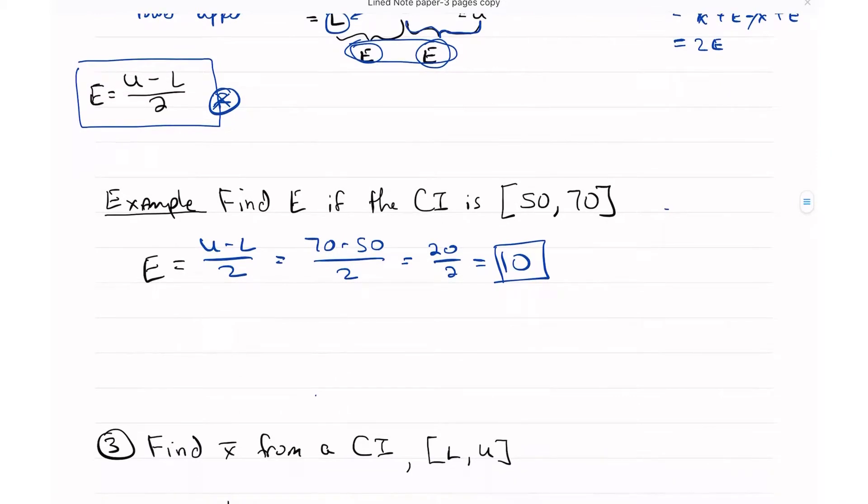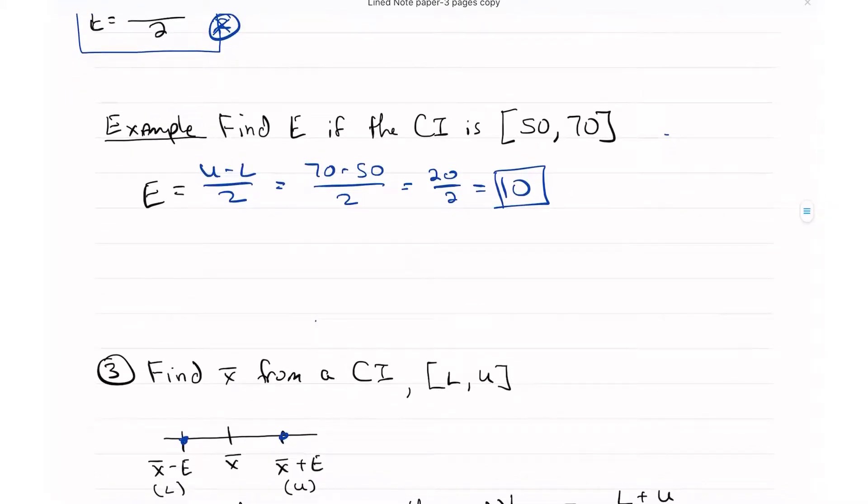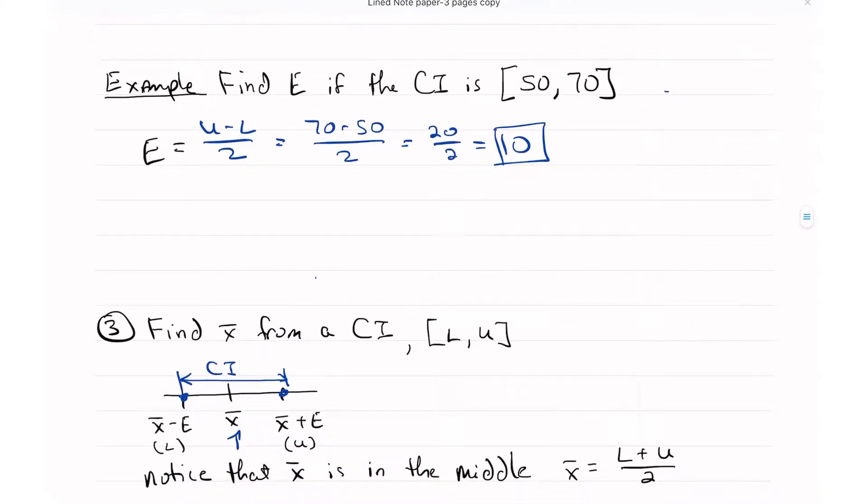The other thing that I can do with the confidence interval is I can figure out what X bar is. So again, if we draw our picture for the confidence interval, this is going to be my confidence interval from the lower value X bar minus E to the upper value X bar plus E. Notice X bar is right in the middle. It's always in the middle. It is always in the middle of the CI.